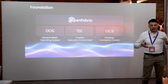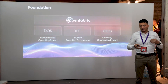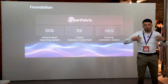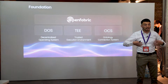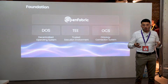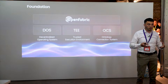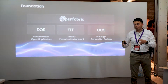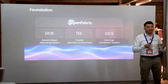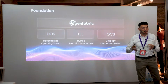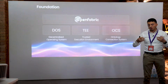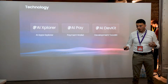Open Fabric has three major components. There's what we call DOS — our Decentralized Operating System — which is the part of the system that makes the network operate predictably and normally. We also have the Trusted Execution Environment, which is a cryptographically secure sandbox that ensures everything executing inside is accessible only to the relevant authorized people. And we have an ontology-based connection system that allows us to connect different algorithms to each other, to the user interface, and to the entire system.